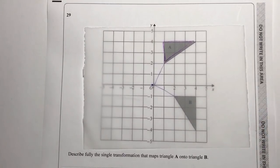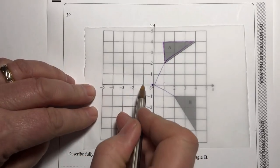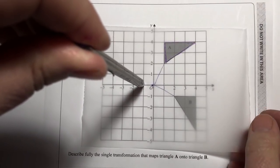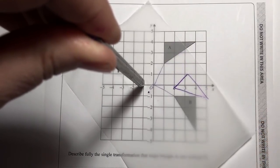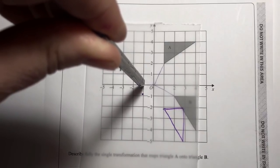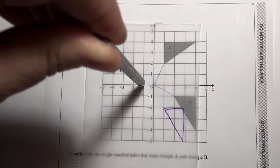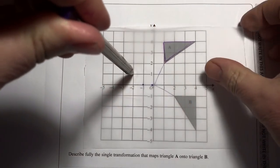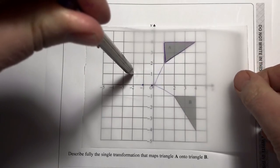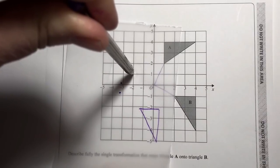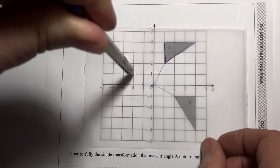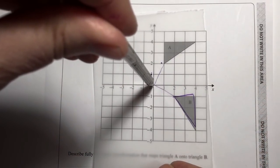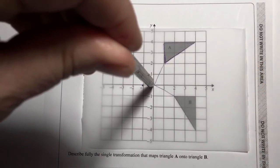If I didn't know it was the origin, I might guess a different point — say minus one zero. But when I rotate around that point, the triangle won't land in the same place. It only works when I put my pen on zero zero. All other rotation points will be incorrect for this question. It does take a bit of practice and experimentation to figure out the correct centre each time.